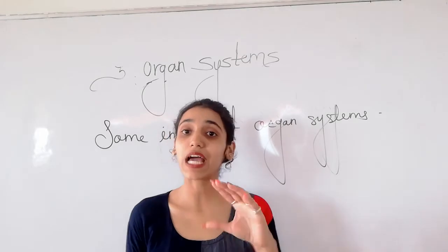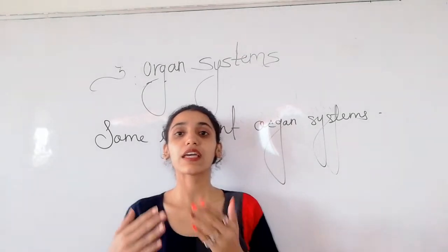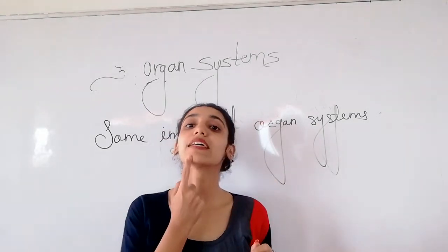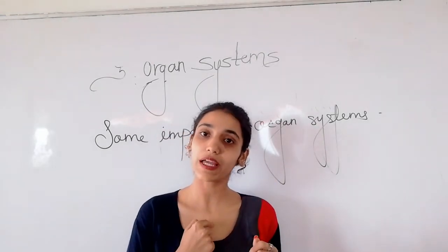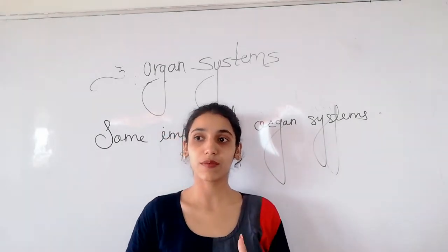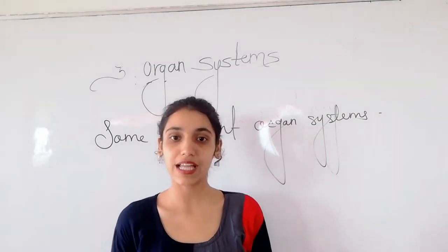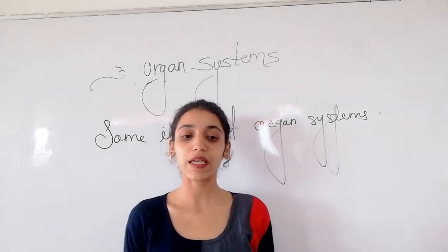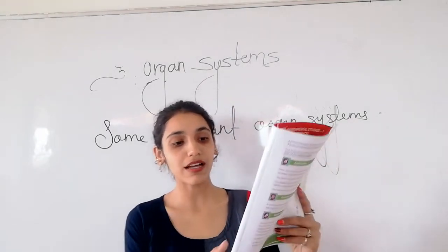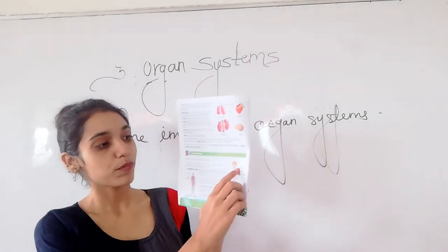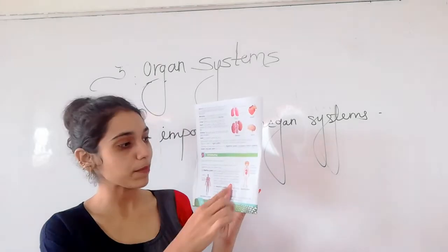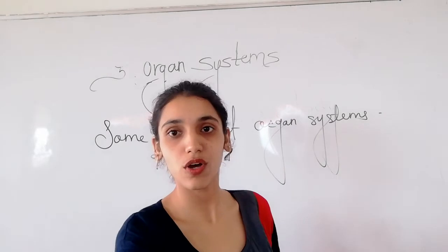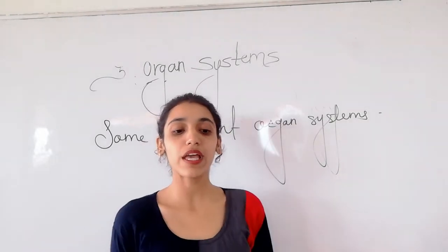The food we eat is not directly digested. This is why it passes from the mouth through the food pipe towards the stomach. The digestive system consists of the mouth, food pipe, stomach, and intestine. These are the important organs of our digestive system.